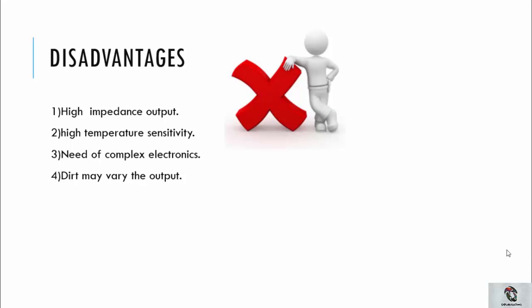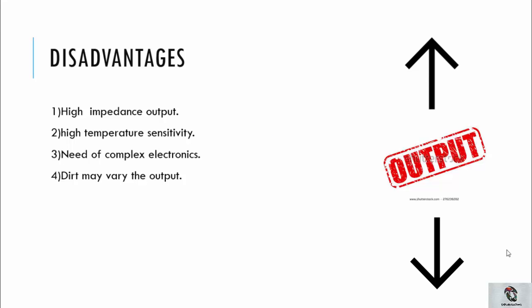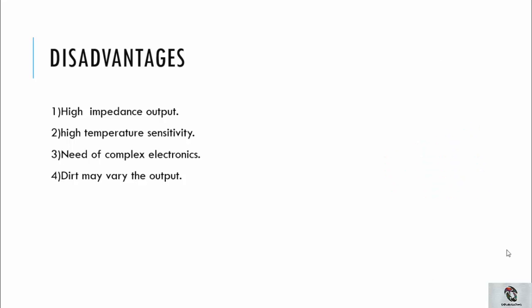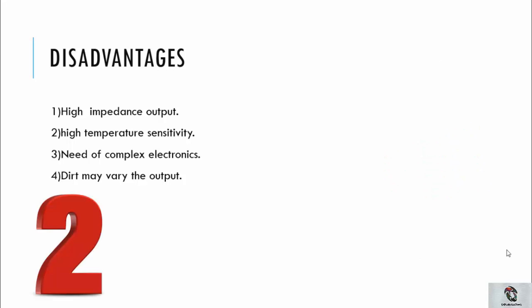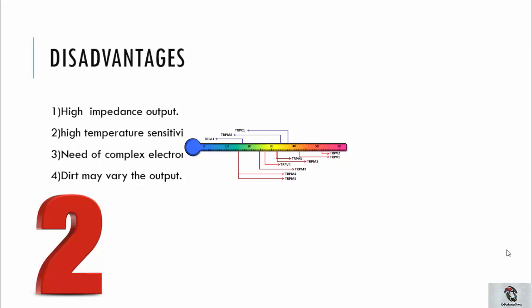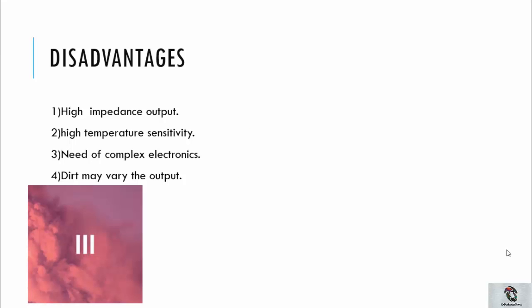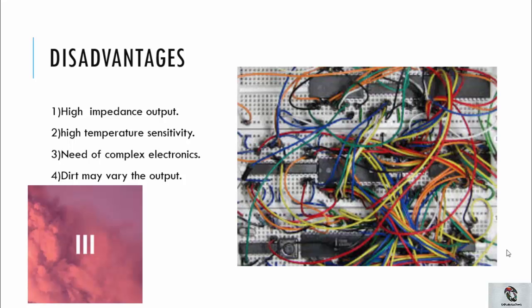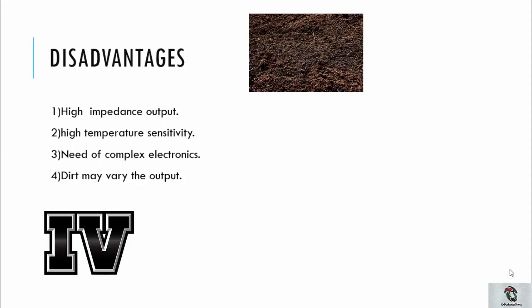Now for the disadvantages: First, high impedance output — we are not getting a high or low output, but something in the middle, which is not useful enough for our calculations. Second, temperature sensitivity — the device can only operate within a certain temperature range; beyond that it will collapse and won't function at higher temperatures. Third, the need for complex electronics, as more resistors, capacitors, and circuits are required. Fourth, dirt may vary the output, as even a small amount of dirt can change the sensitivity of the response.